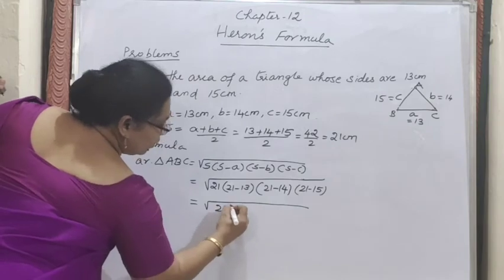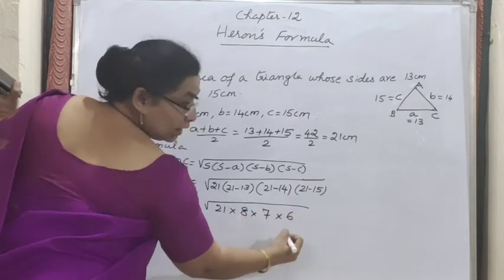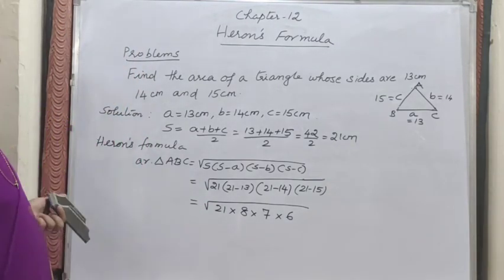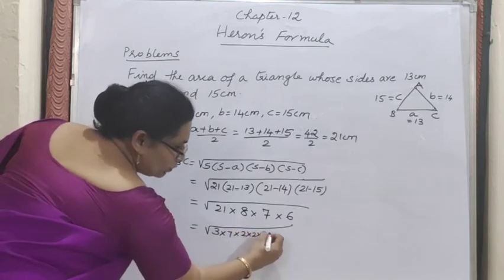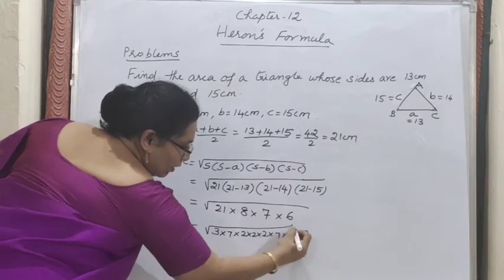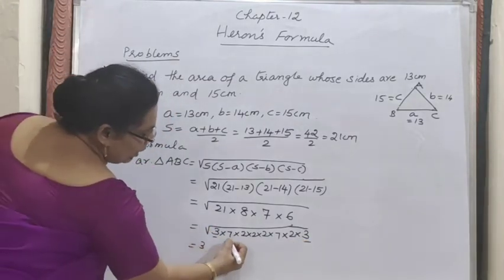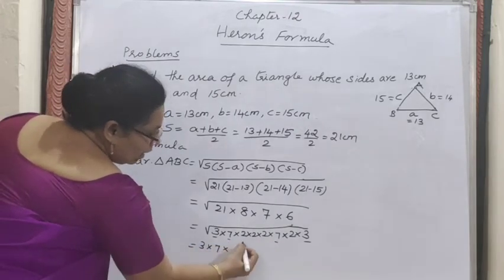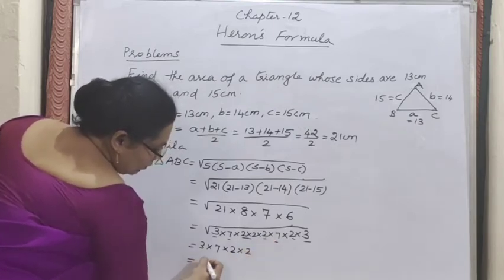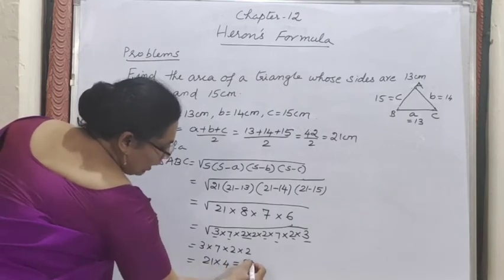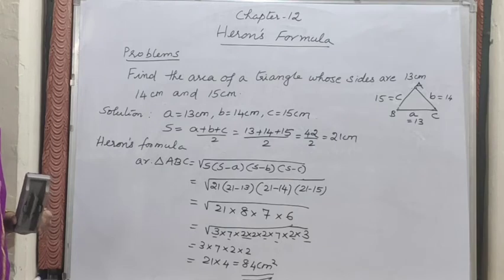Taking out the pairs from under the root: one 3, one 7, and two 2s come outside. So outside the root we get 3 × 7 × 2 × 2 = 84. Therefore the area = 84 cm². This is the area only — 84 cm².